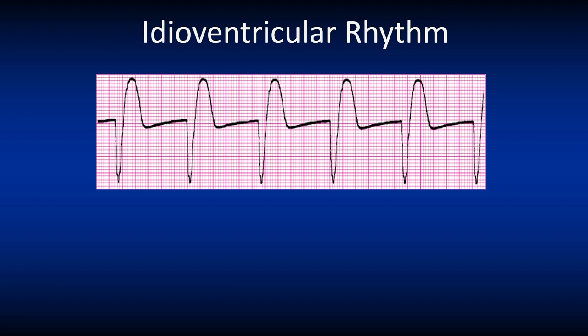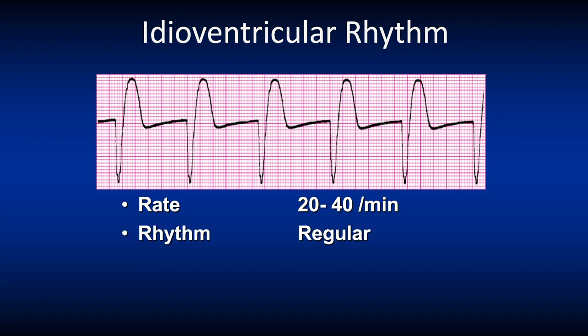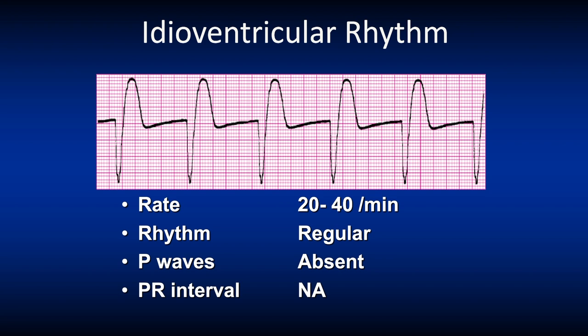Let's look at an idioventricular rhythm. The rate is 20 to 40 per minute, the rhythm is regular, P waves are absent as the rhythm originates inside the ventricles, and there is also no PR interval. The QRS complex, as it's originating inside the ventricles, is wide.